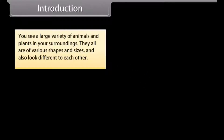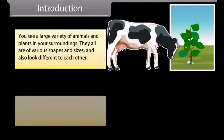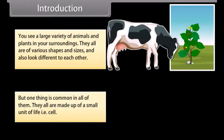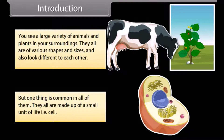Introduction. You see a large variety of animals and plants in your surroundings. They all are of various shapes and sizes and also look different from each other. But one thing is common in all of them — they all are made up of a small unit of life, that is, the cell. So in this module we are going to learn about cell and its structure.